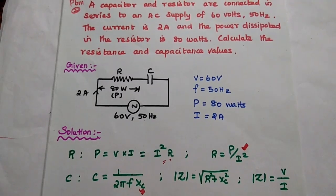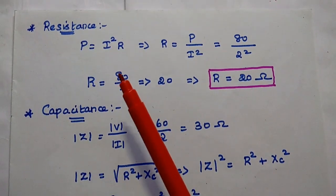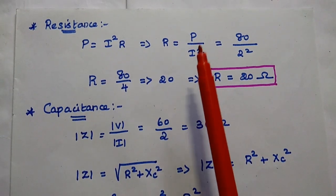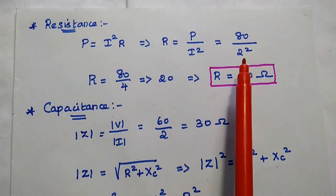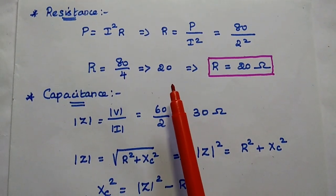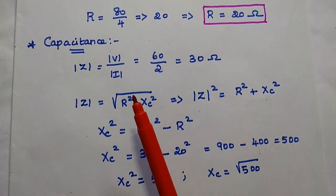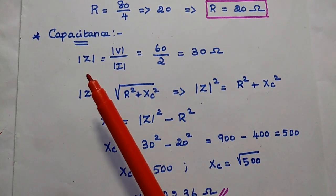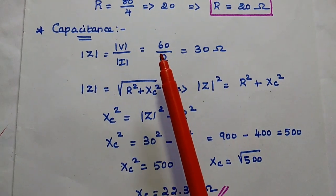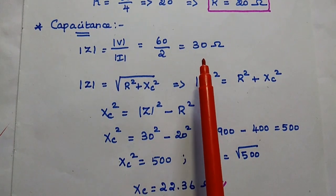Finding the resistance: using P equals I squared times R, so R equals P divided by I squared equals 80 divided by 2 squared equals 80 divided by 4 equals 20 ohm. Next, finding the impedance: Z equals V divided by I equals 60 divided by 2 equals 30 ohm.